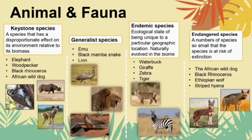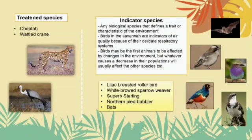The endemic species is an ecological state of being unique to a particular geographic location. Examples include giraffe, zebra and tiger. Next, endangered species, which are at risk of extinction. Examples include the African wild dog, black rhinoceros, Ethiopian wolf and striped hyena. Next, 300 species that are vulnerable to endangerment in the near future, such as cheetah and wattled crane. The last category is indicator species — any biological species that defines a trait or characteristic of the environment. All the birds shown are examples of indicator species. This picture shows animals that can be found in this biome.